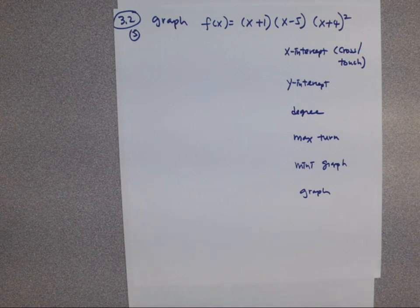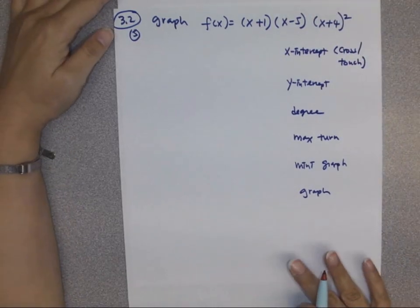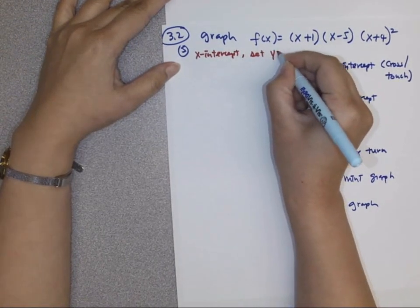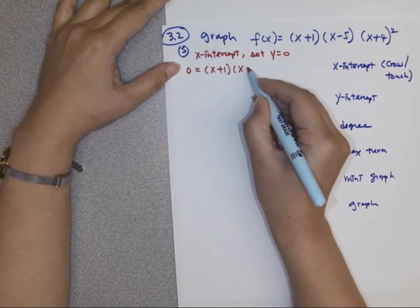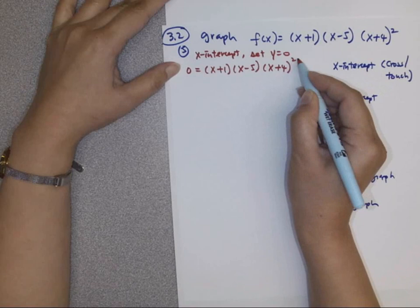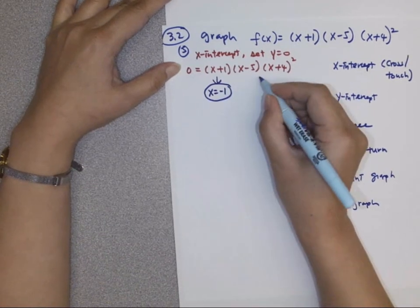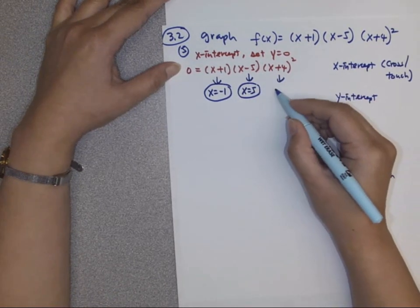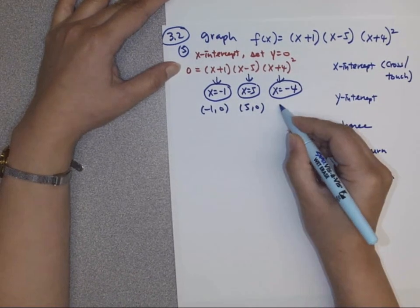For this question, we need to find x and y intercepts, know if it's touching or crossing, the maximum turns, and graph it. Set y equal to zero — do not multiply out since it's already factored. Solving: x + 1 = 0 gives x = −1; x − 5 = 0 gives x = 5; x + 4 = 0 gives x = −4. Written as points: (−1, 0), (5, 0), (−4, 0).